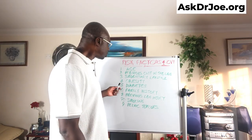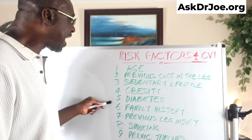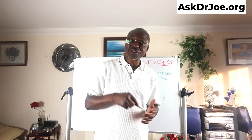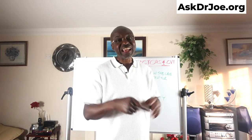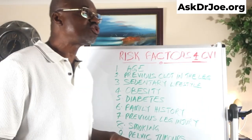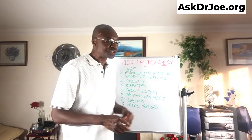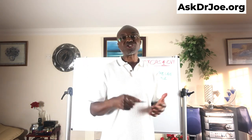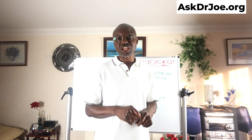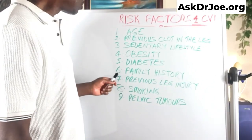So the increase in intra-abdominal pressure is not good for venous drainage back to the heart — you're going to end up with pooling of blood in the legs. Number five is diabetes. Diabetes damages blood vessels, and that includes the veins. Number six is family history of chronic venous insufficiency. If your mom, your dad, your grandparents had the problem, that raises your risk — it is not a given, but it raises your risk.